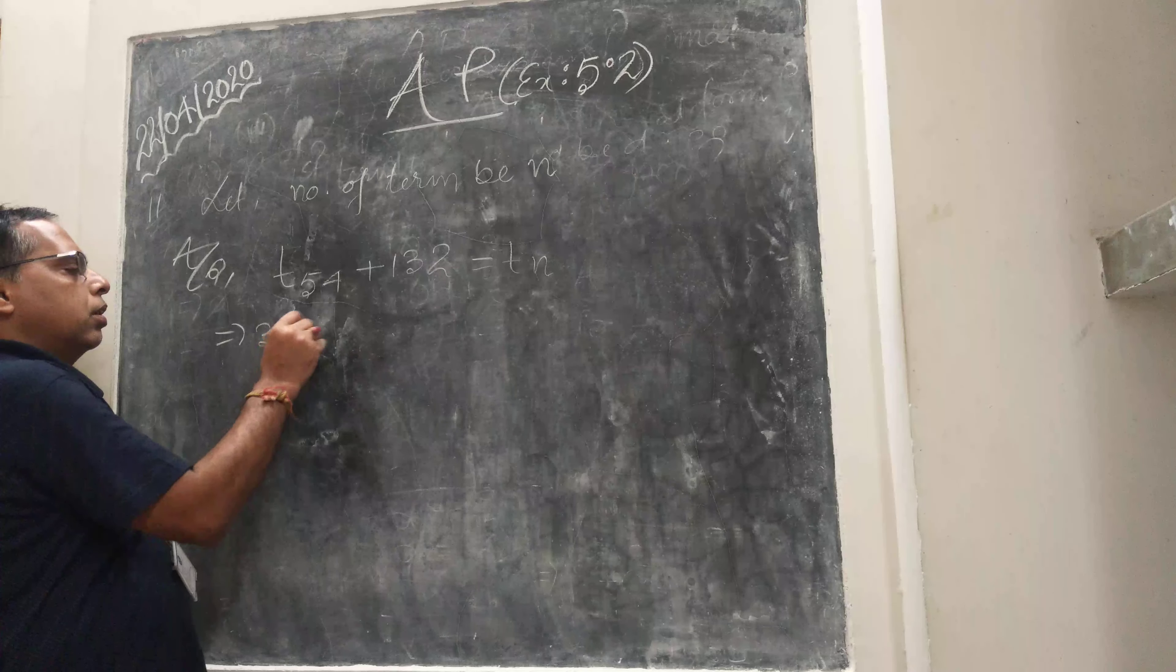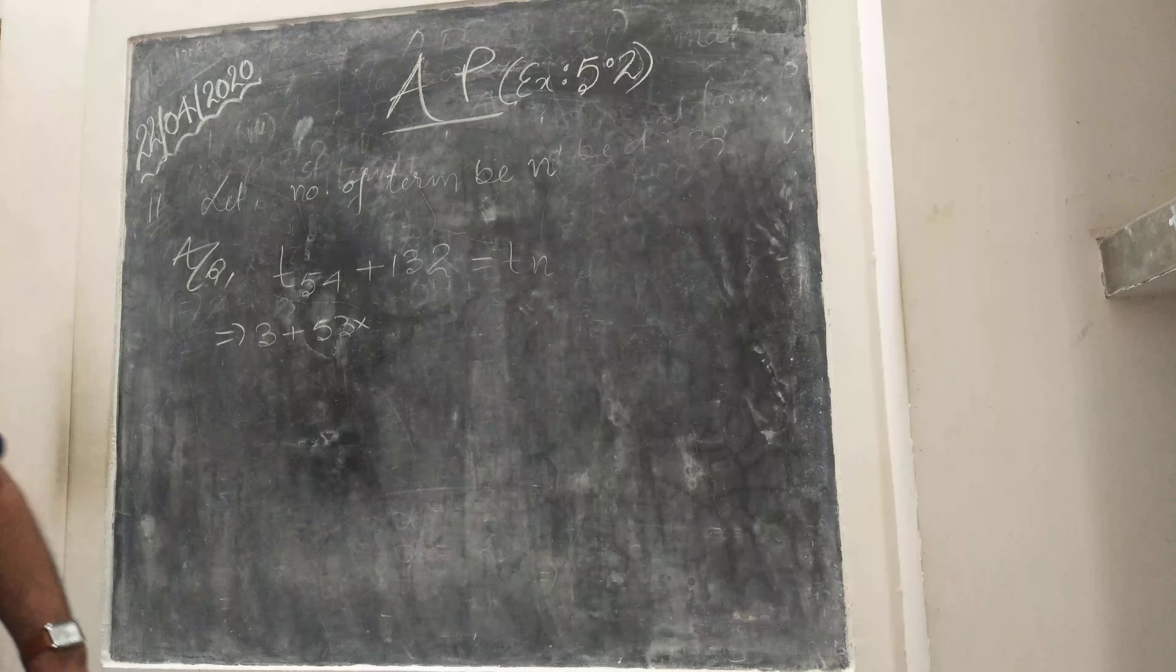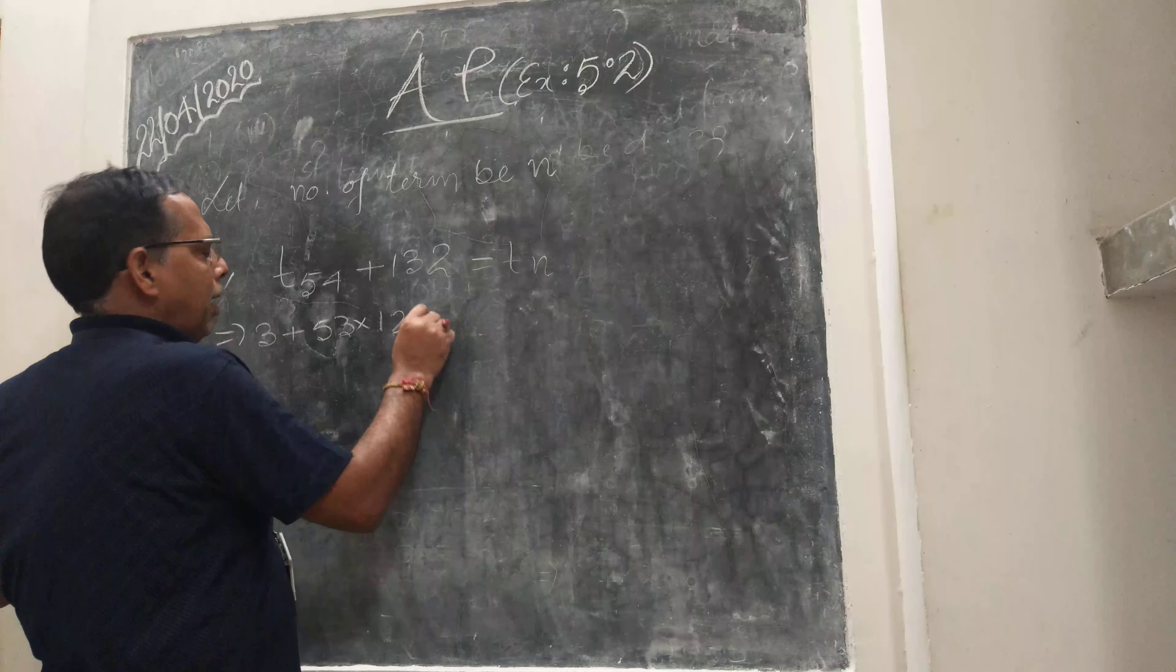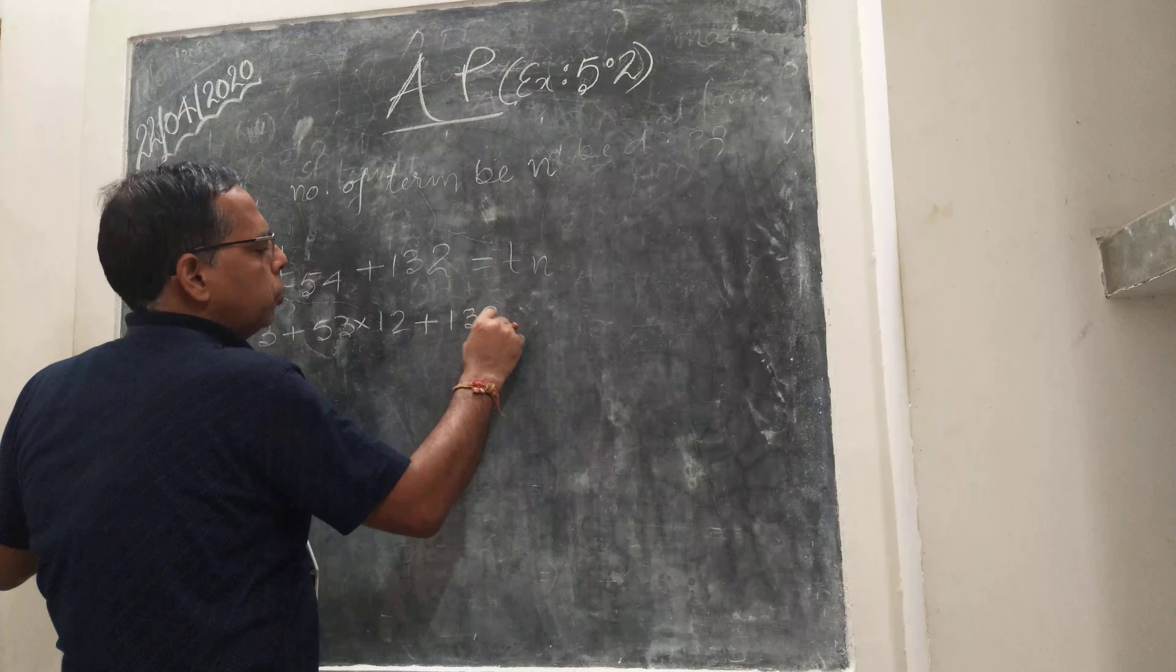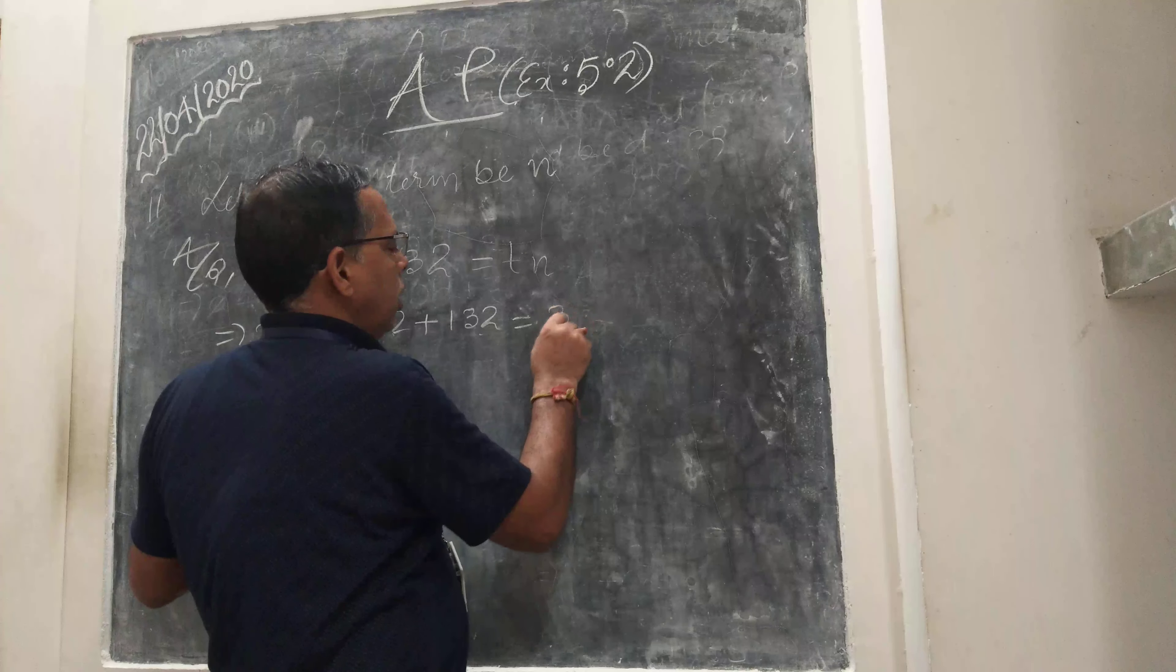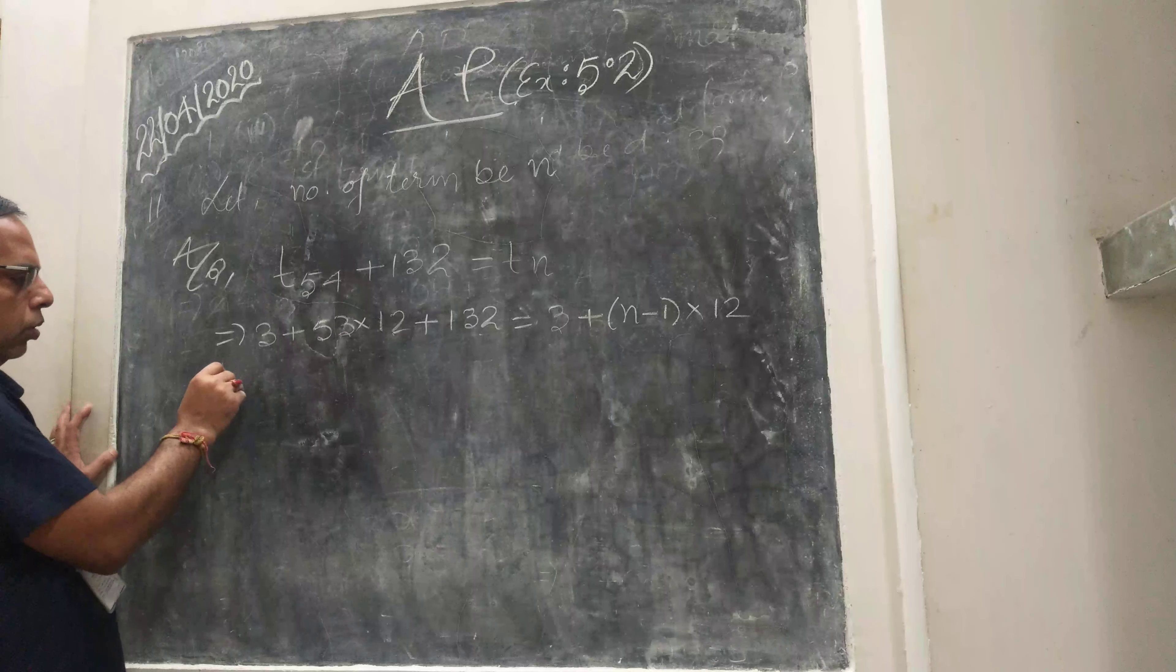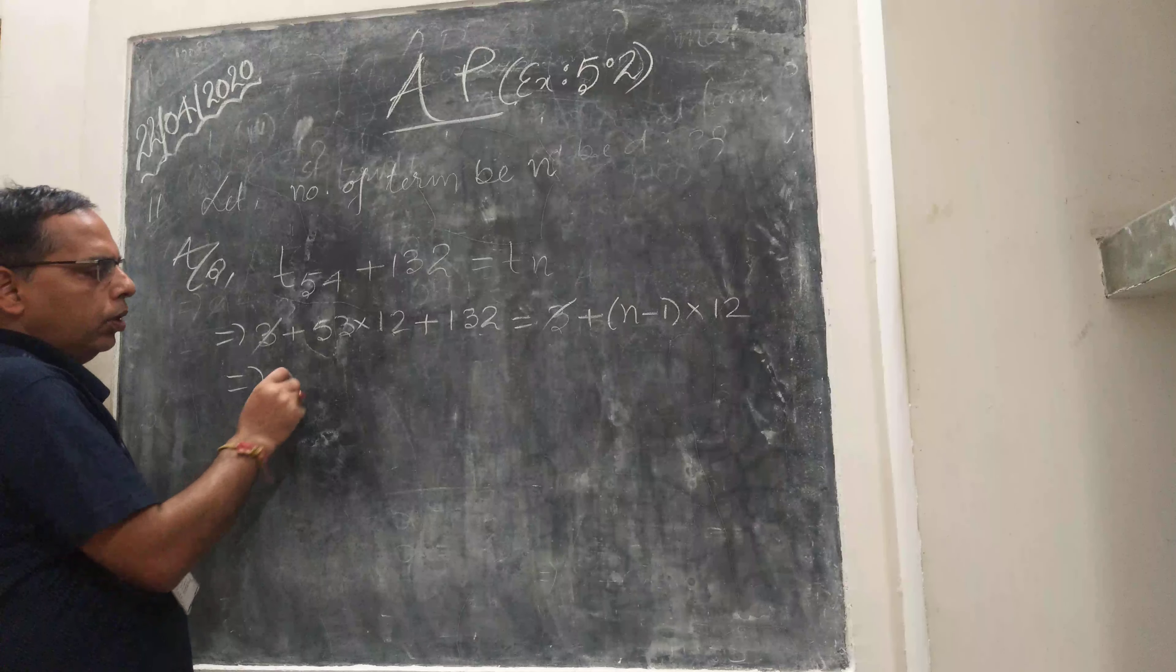What is A? A is 3. So 3 plus 53. What is the common difference? 15 minus 3 equals 12. So 3 plus 53 times 12 plus 132 equals 3 plus (N minus 1) times 12. These 3s cancel.